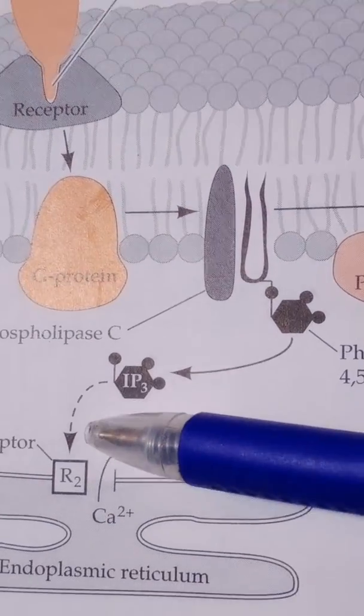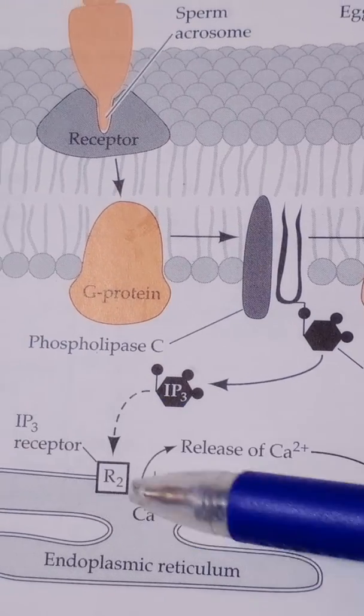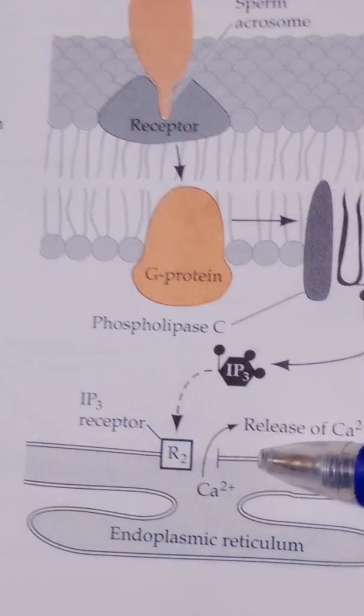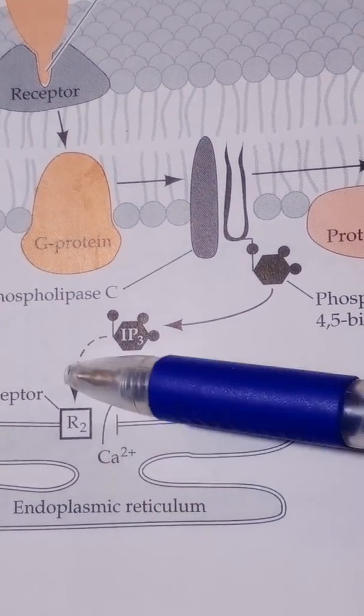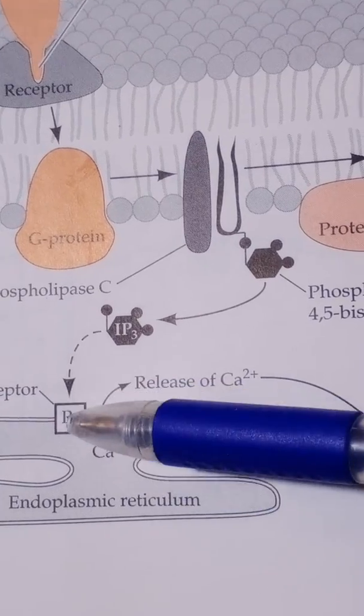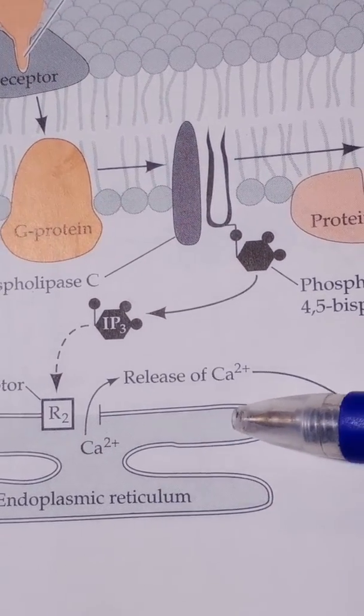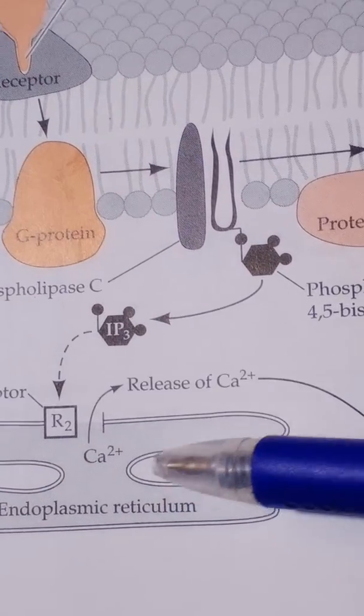Okay. IP3 causes the activation of IP3 receptors on endoplasmic reticulum. This is the endoplasmic reticulum. And it causes this receptor, as it is activated, it causes the release of calcium ions. The calcium ions are released from smooth endoplasmic reticulum.